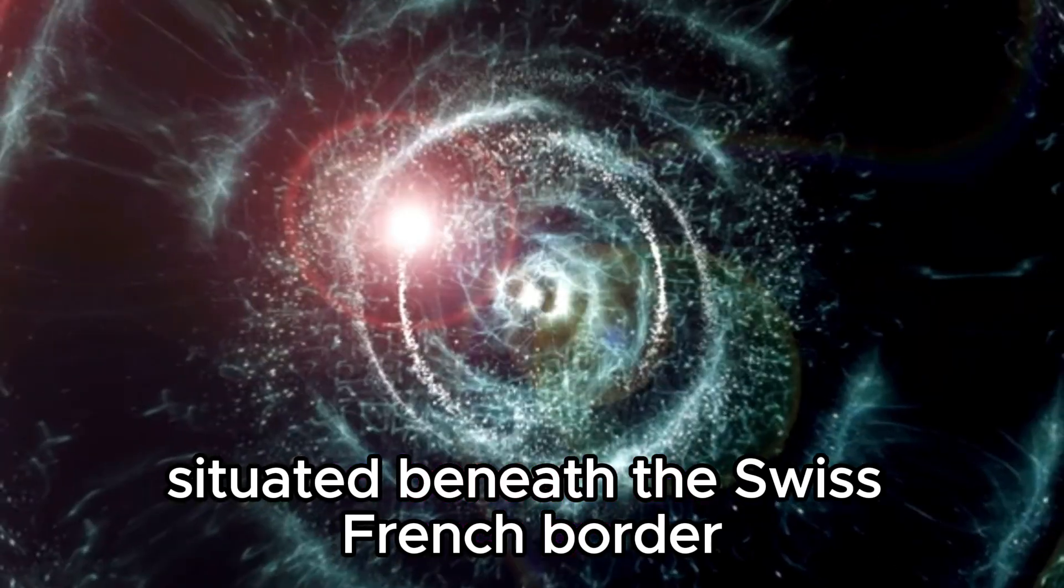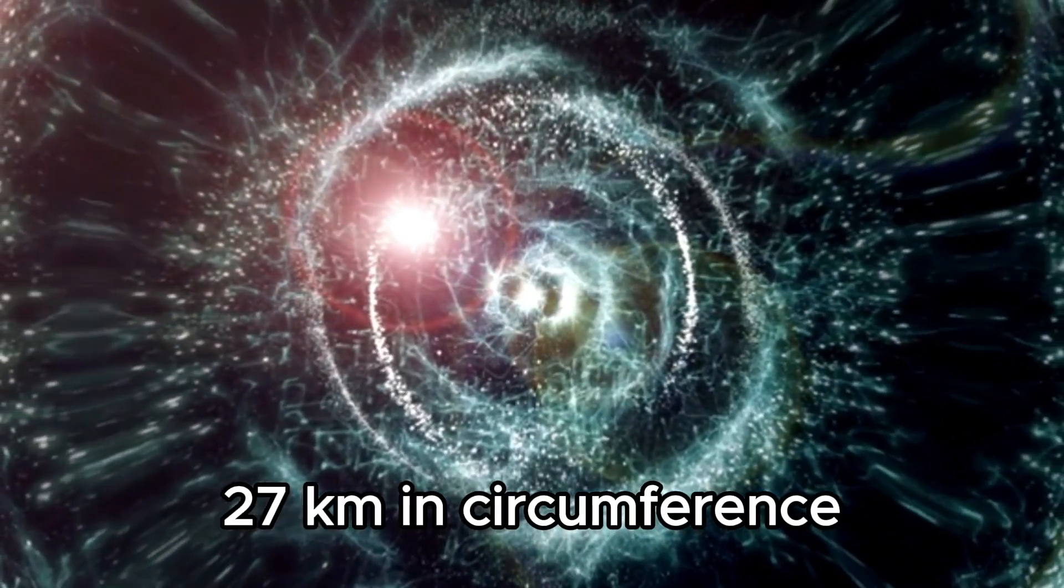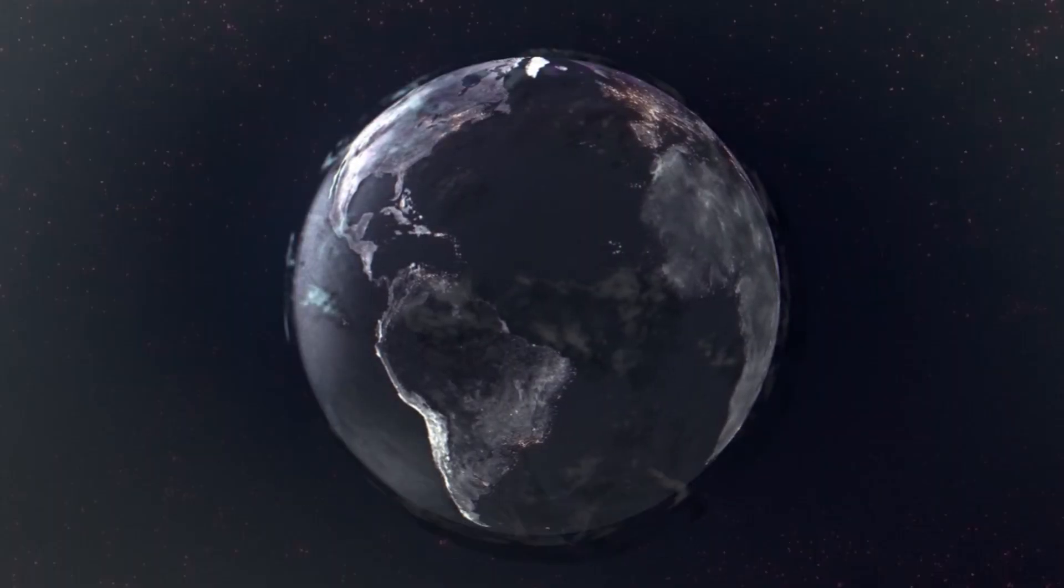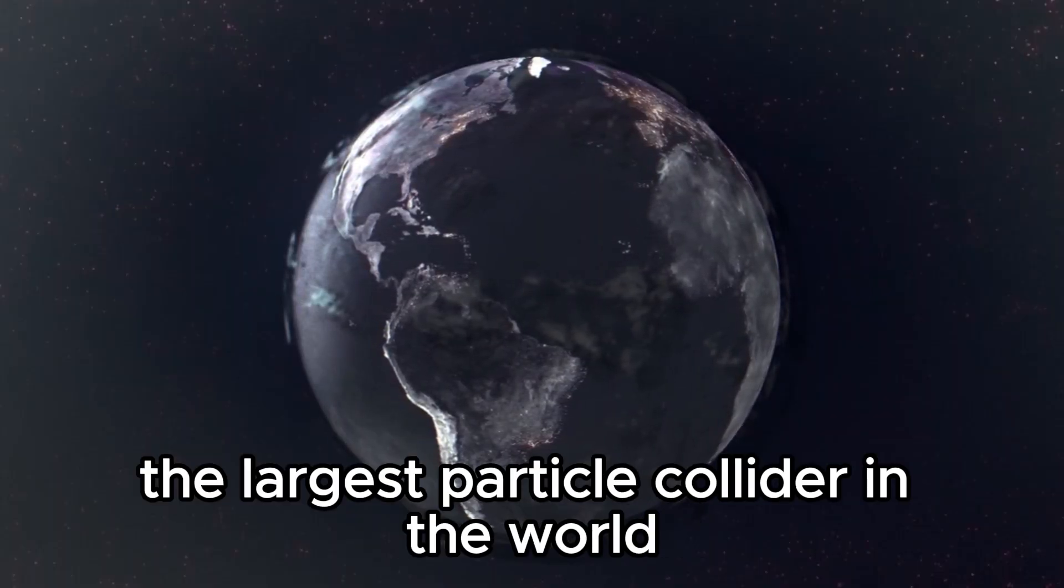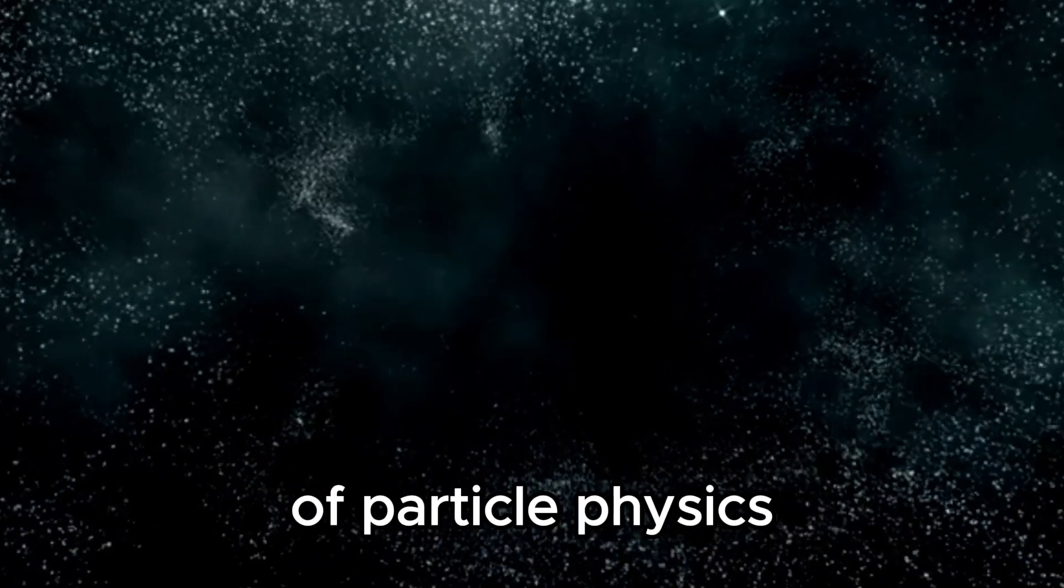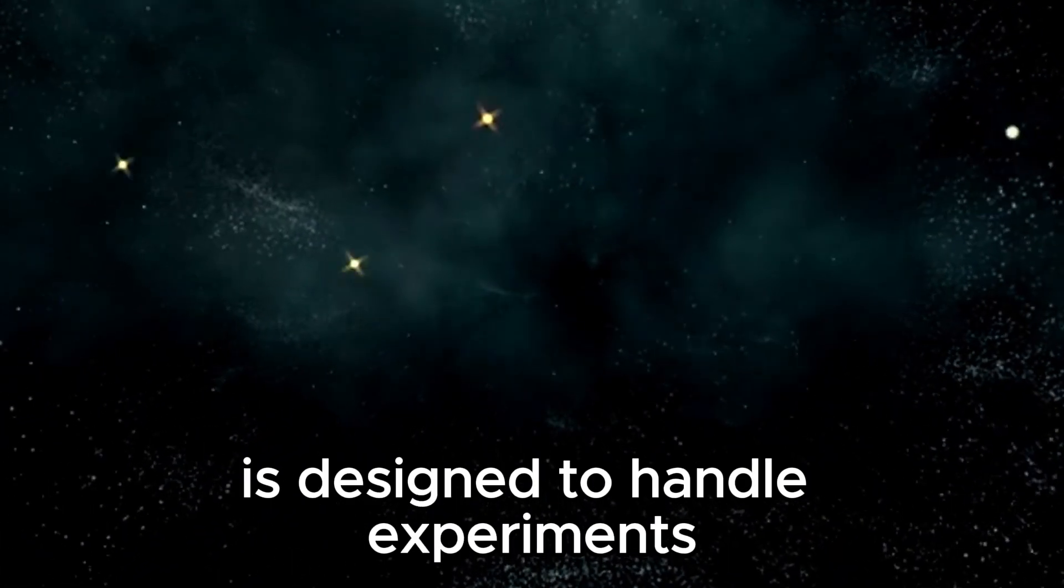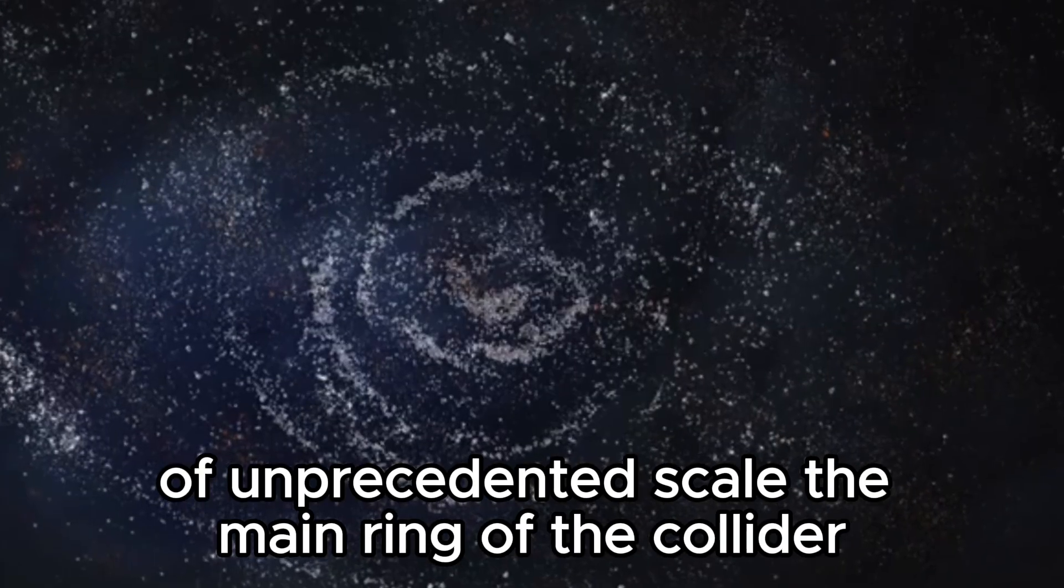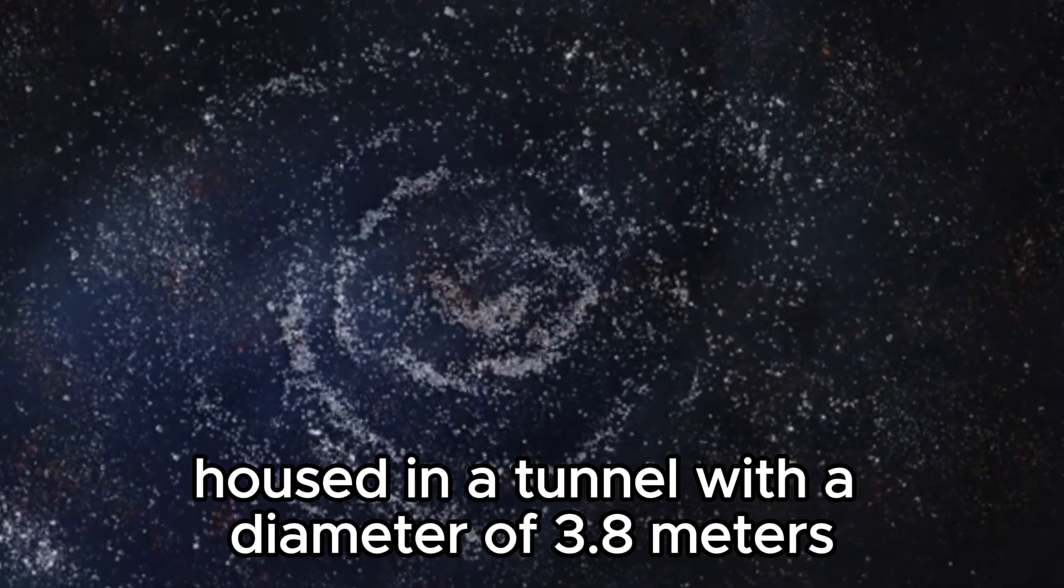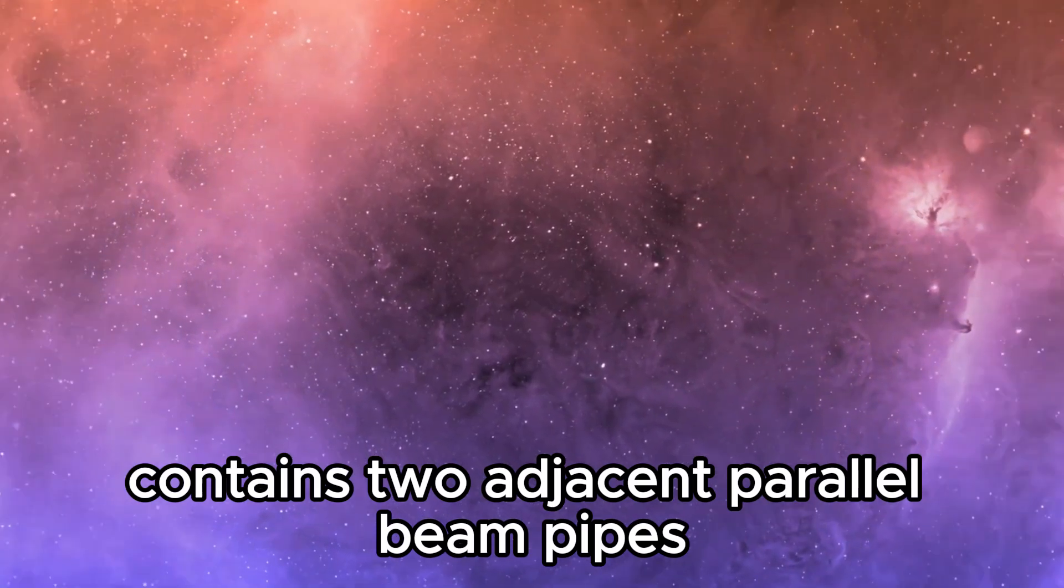Situated beneath the Swiss-French border, the Large Collider runs through a tunnel 27 kilometers in circumference and as deep as 175 meters underground. This makes it the largest particle collider in the world and one of the most significant instruments in the field of particle physics. The structure of the Large Hadron Collider is designed to handle experiments of unprecedented scale. The main ring of the collider, housed in a tunnel with a diameter of 3.8 meters, contains two adjacent parallel beam pipes.